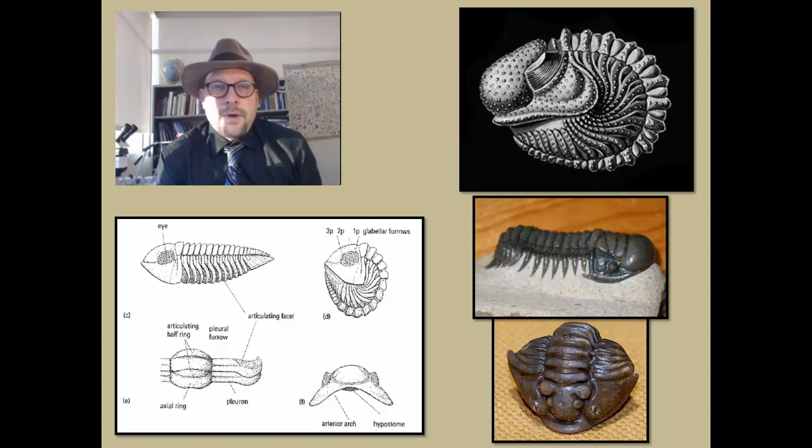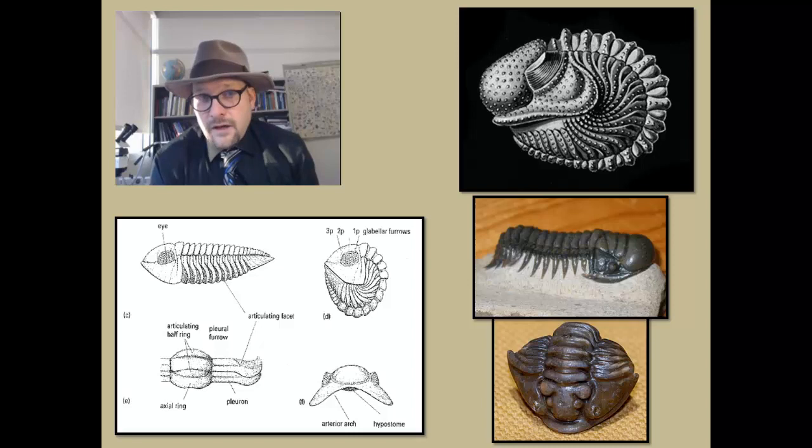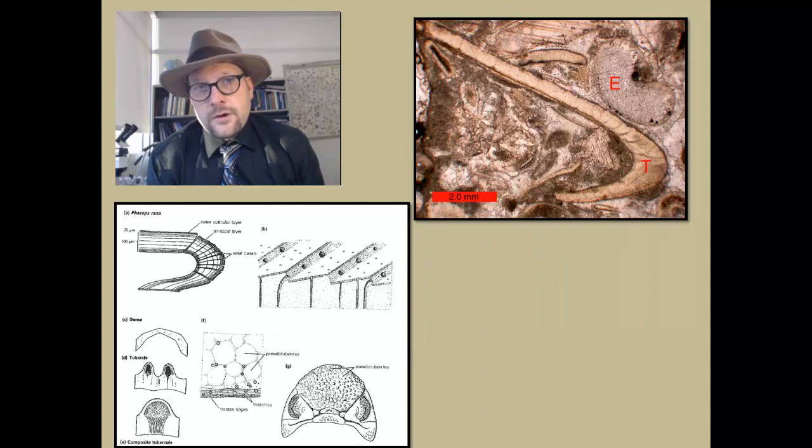The exoskeleton of trilobites is made out of low-magnesium calcite, which is a hard material that can be used for protection. Trilobites can coil up into balls for defense. In fact, many fossils have been found with trilobites in these coiled defensive positions. Because the exoskeleton of trilobites is made out of calcite, it readily preserves in the fossil record as well.